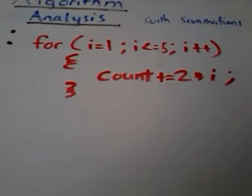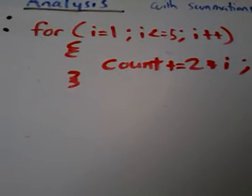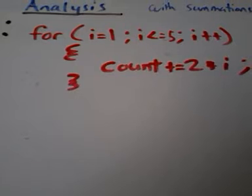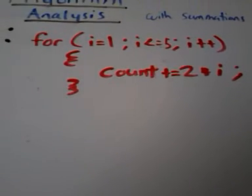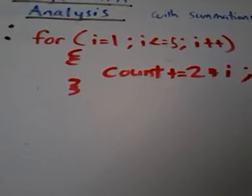Here we have a short snippet of code: for i equals 1, i is less than or equal to 5, i plus plus, count plus equals 2 times i.